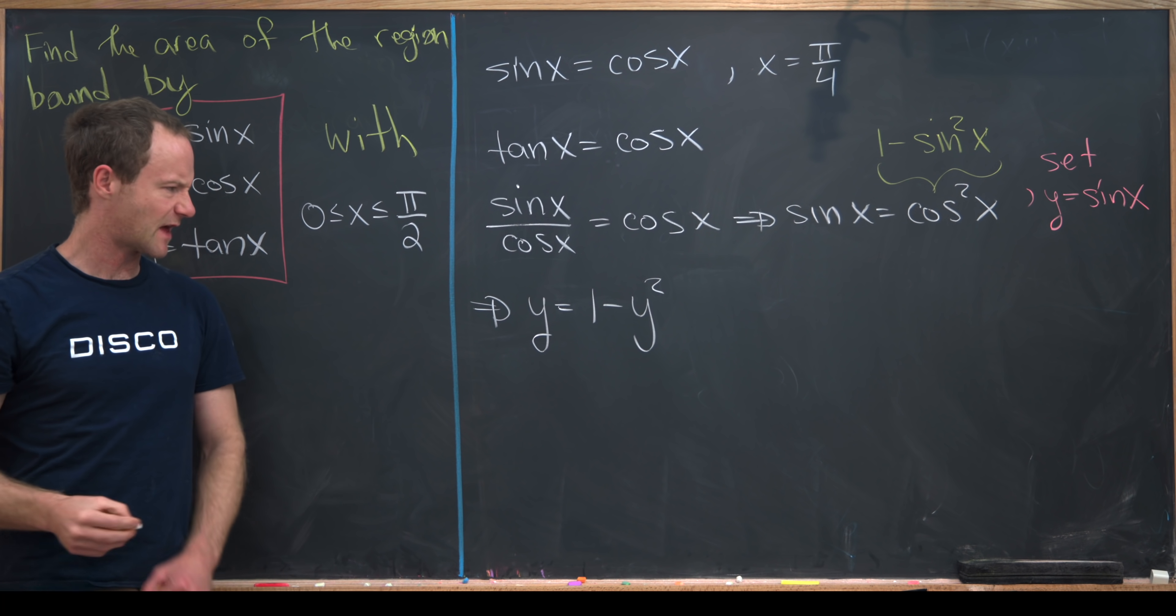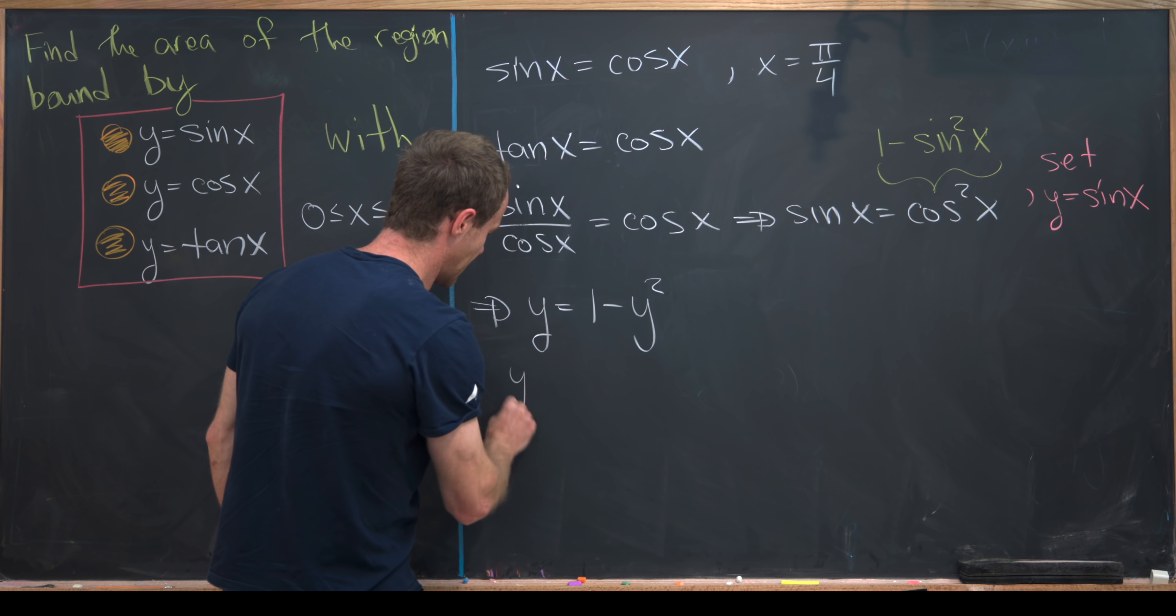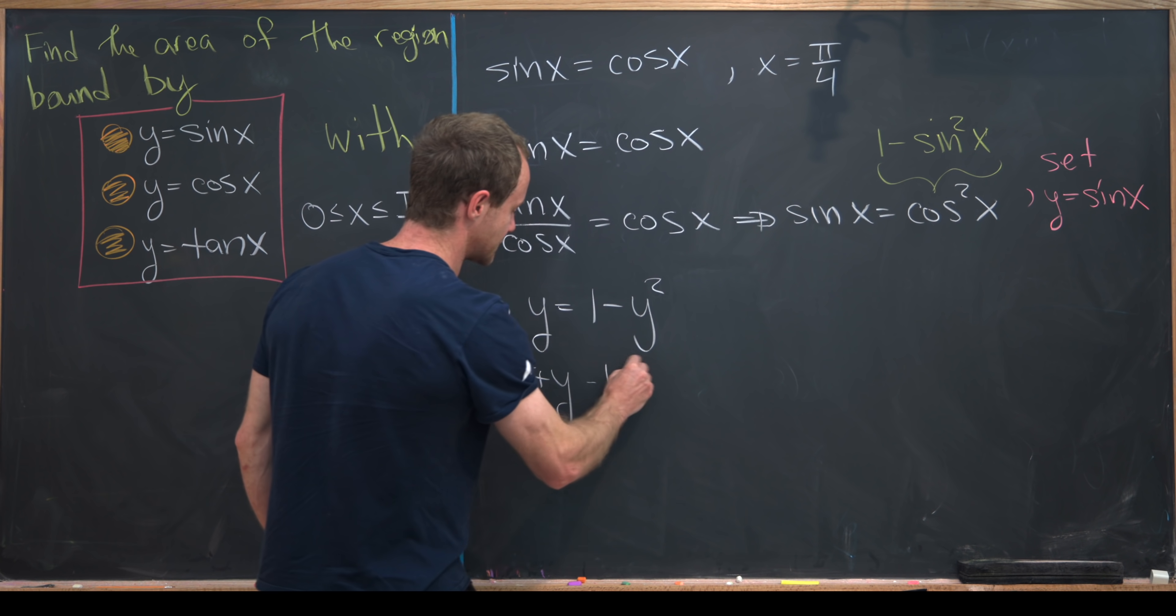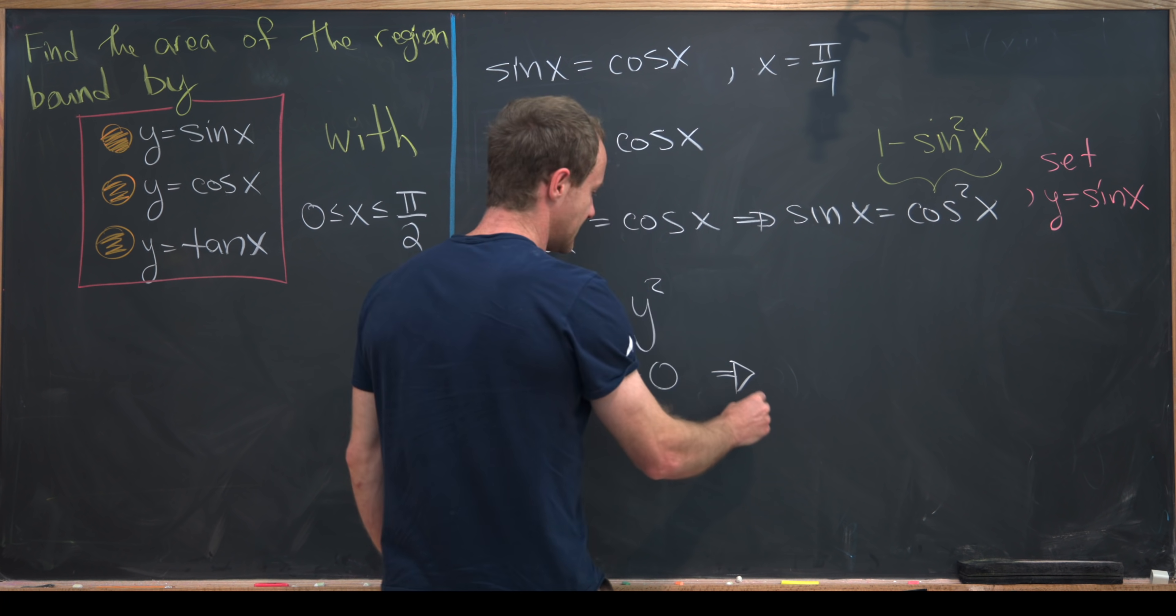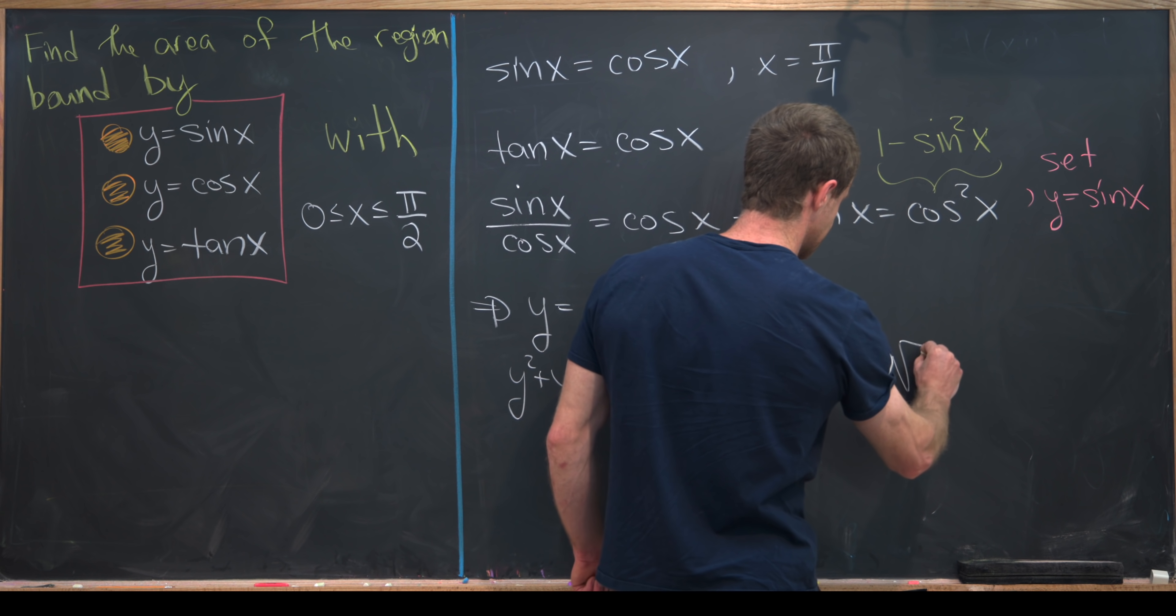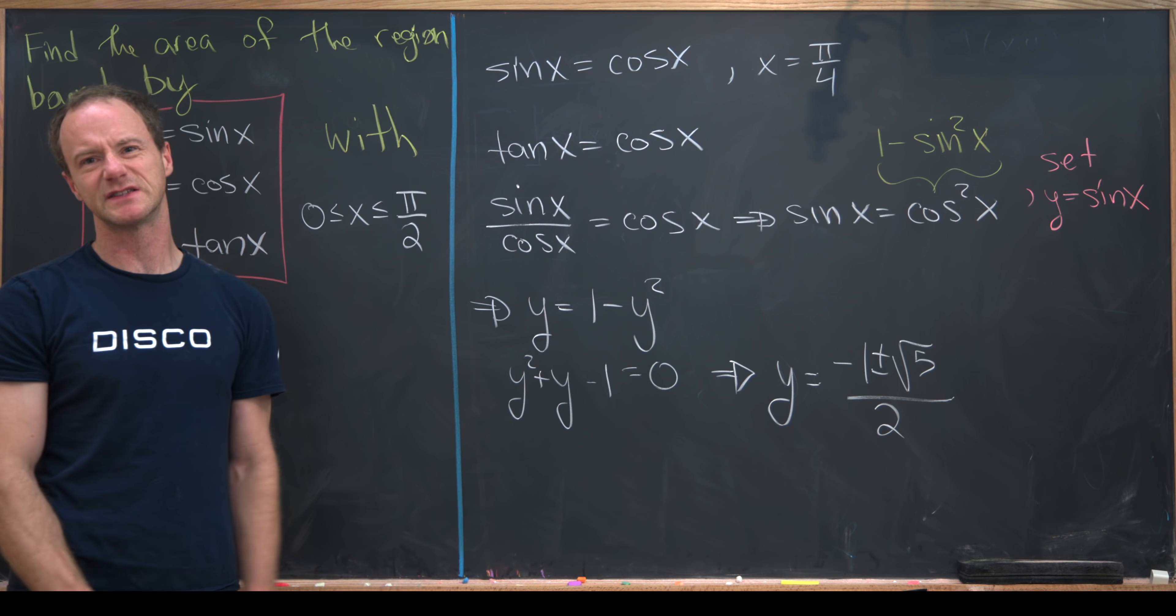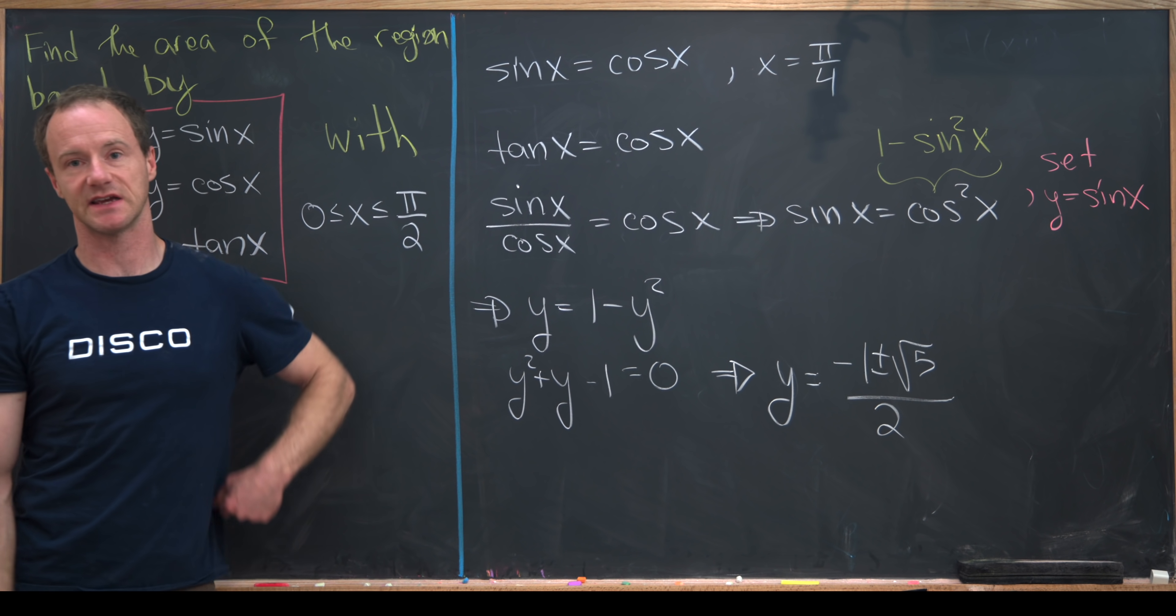Now we can solve that by moving some things around and using the quadratic formula. So now we have y squared plus y minus 1 equals 0. That tells us that y equals negative 1 plus or minus the square root of 5 over 2, where b squared minus 4ac is going to be 5 in this case.